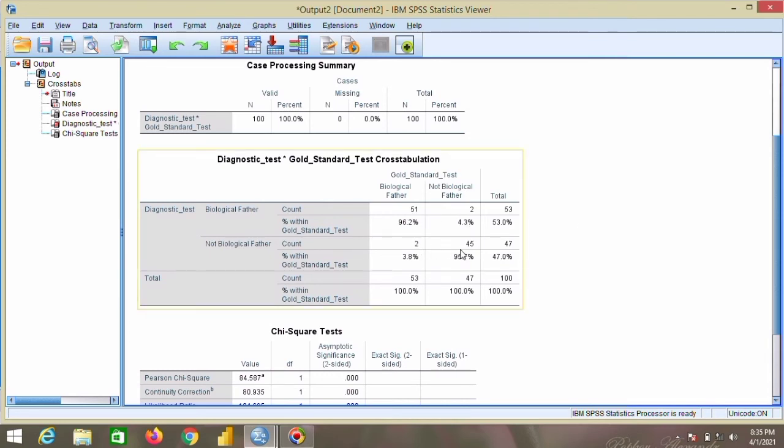From this cross tab we can understand the sensitivity and specificity. As I said, this will be A, B, C, and D. A, the proportions of people who are on A, will give our sensitivity. Here our sensitivity is 96.2%. What does that mean? It means that the gold standard test and the diagnostic test has given the same result, and that power is 96.2%. And specificity is 95.7%. That is, on gold standard test those persons were not biological fathers, and also the diagnostic test has given the same result. So that was 95.7%, which means out of 100, for 95.7% you will have this result.